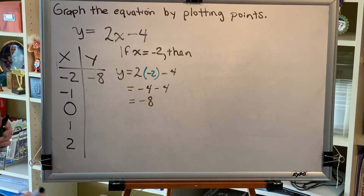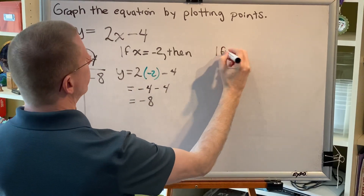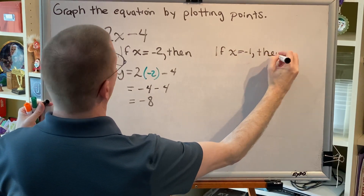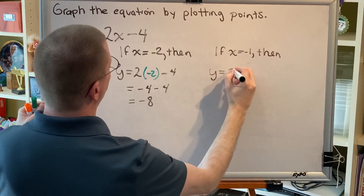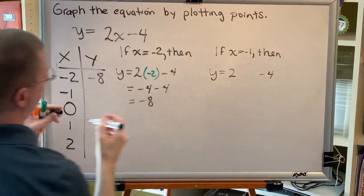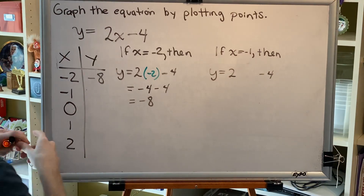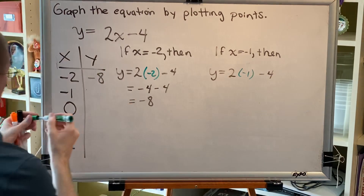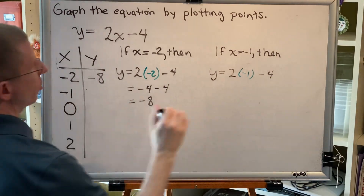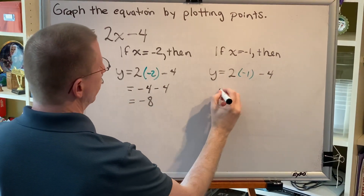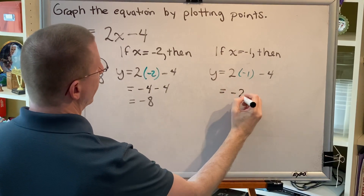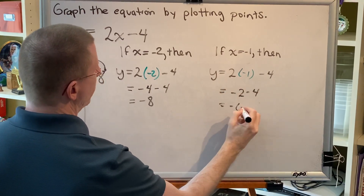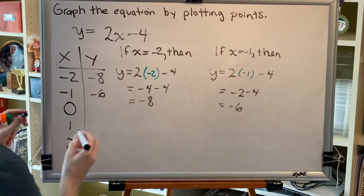Let's try our next value. If x equals negative 1, then y equals 2 times (negative 1) subtract 4. Multiplication happens before subtraction, so 2 times negative 1 is negative 2, and negative 2 subtract 4 is negative 6.